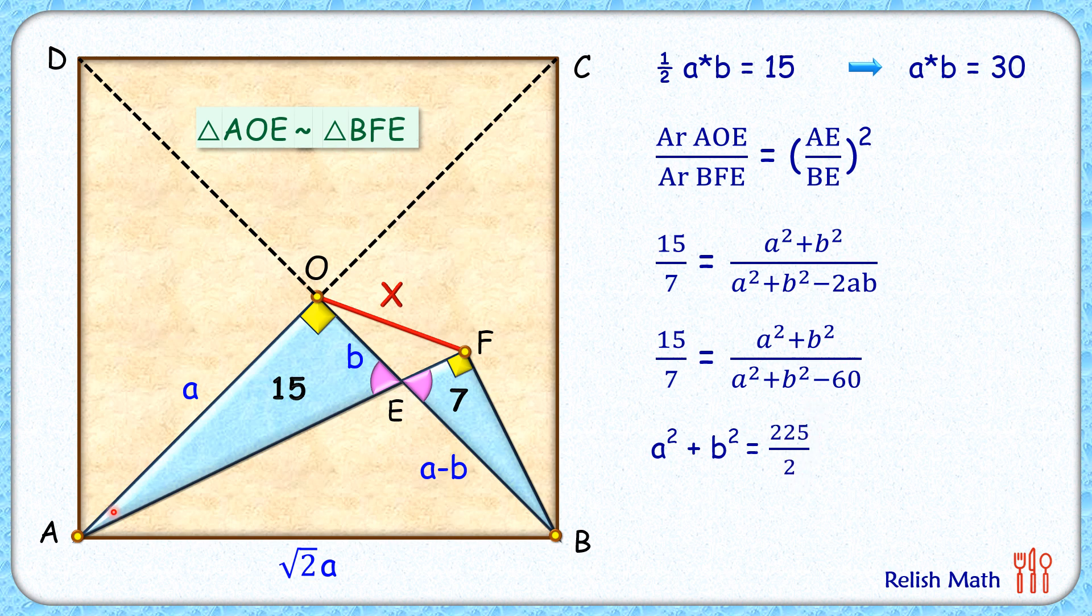But a² plus b² in this triangle, we can make out a² plus b² is the hypotenuse square or AE². So simplifying, we'll get AE as 15 upon root 2 centimeter.